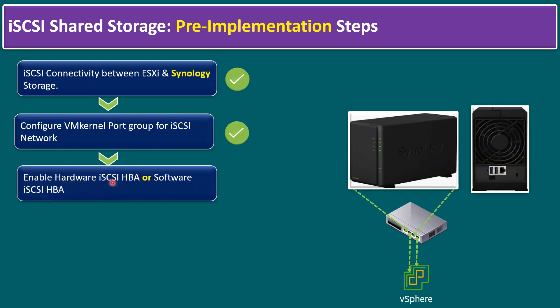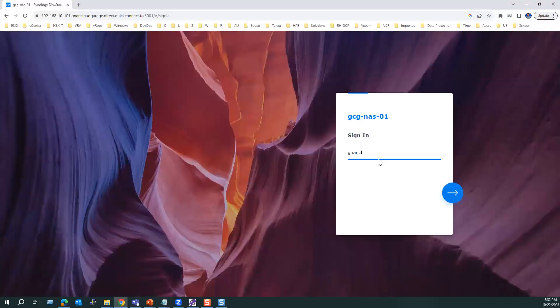The third step is enable hardware iSCSI HBA or software iSCSI HBA. This is the step we are going to configure in our lab. Let me connect to our lab system — first I will connect to our Synology storage.